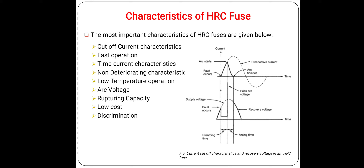Rupturing capacity is a key advantage of the HRC fuse. It is expressed in MVA and equals the product of service voltage in kV and the RMS value of the prospective current in kiloamperes. It is important to realize that a fuse is never actually required to carry a current equal to its rupturing capacity — the fuse melts much earlier due to cutoff action, so the full prospective current is never actually passed. The low cost characteristic also follows from this, as the actual current interrupted is much less than for other interrupting devices.